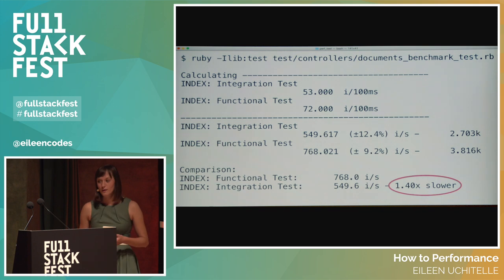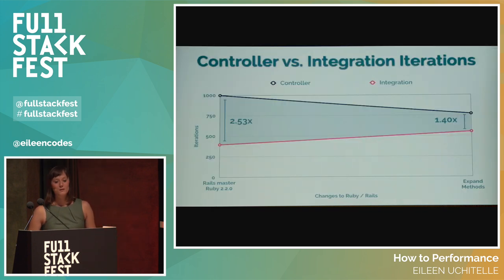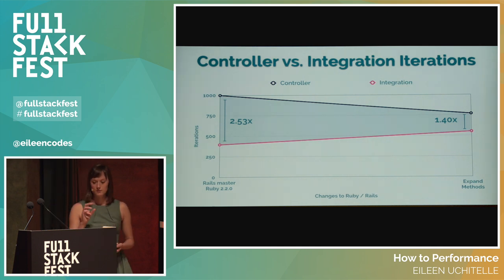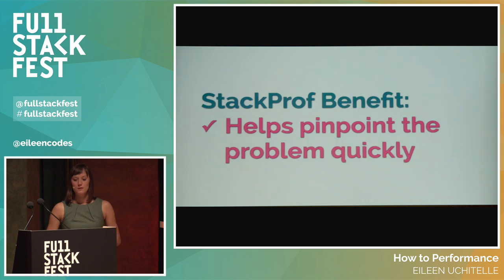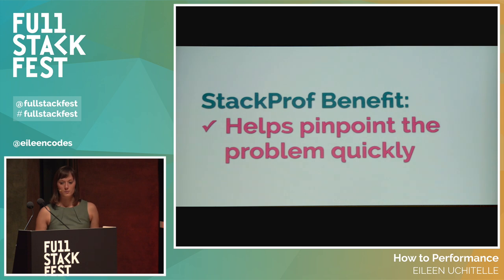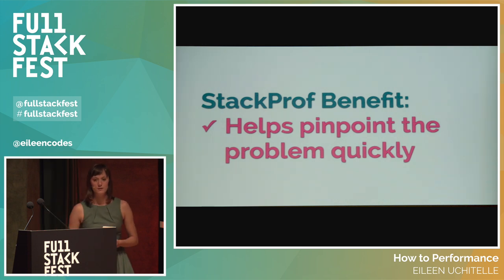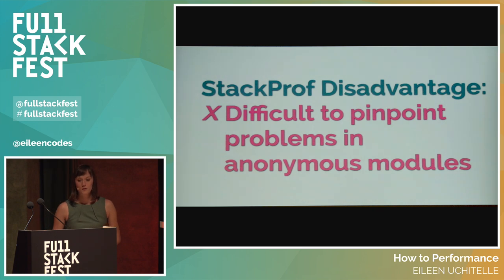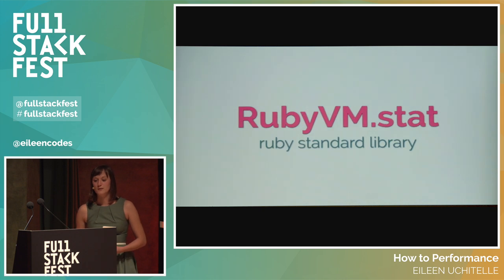Now we need to follow our number one rule of always be benchmarking. If we run the benchmark script again, we can see that integration tests went from being 2.53 times slower to 1.4 times slower. That's quite an improvement. We lost some iterations in the controller tests, but the integration tests have gained about 200 more iterations per second. We can see that we're definitely improving the speed of integration tests and slowly closing the gap. StackProf is really great in helping point out slowdowns in your code quickly because it sorts by the slowest profile rather than giving you all of the information at once.